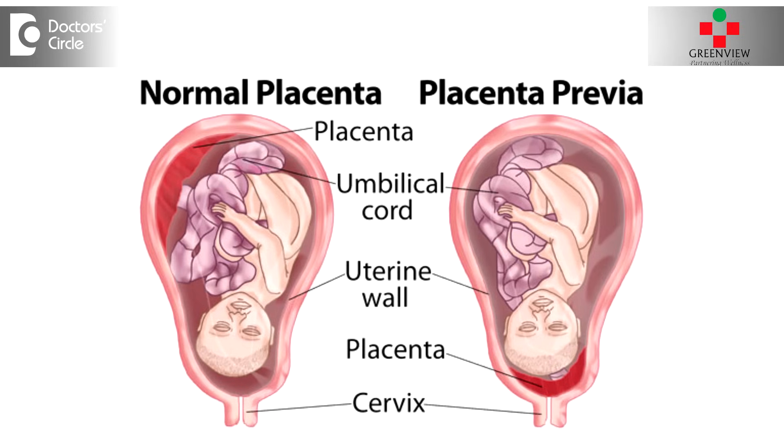Cigarette smoking also causes preterm birth and birth defects. Certain conditions can also develop during pregnancy making it high risk, such as pregnancy-induced hypertension — increased blood pressure after 20 weeks of pregnancy — which can lead to preeclampsia and eclampsia. Gestational diabetes, with increased blood sugar during pregnancy, affects both the mother and fetus. Multiple pregnancies — twins or triplets — also carry risks including preterm delivery. A low-lying placenta, or placenta previa, causes bleeding during pregnancy.